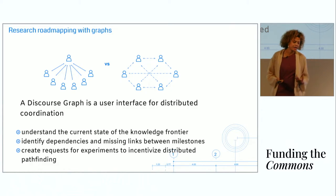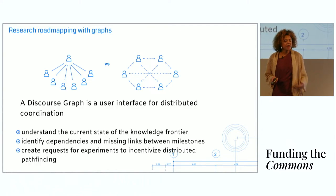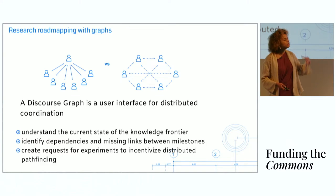A discourse graph is a user interface for distributed coordination. It works well with the roadmapping system. It helps us understand the current state of the knowledge frontier, that's the synthesis process, to identify dependencies and missing links between milestones, and to create requests for experiments to incentivize distributed pathfinding. So the process where different distributed decentralized researchers can follow their own local incentives while keeping in mind global incentives, global state, and the global optimum of the system.